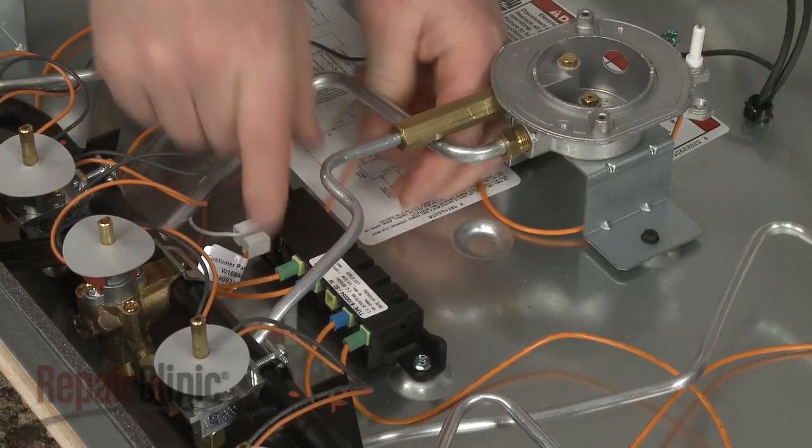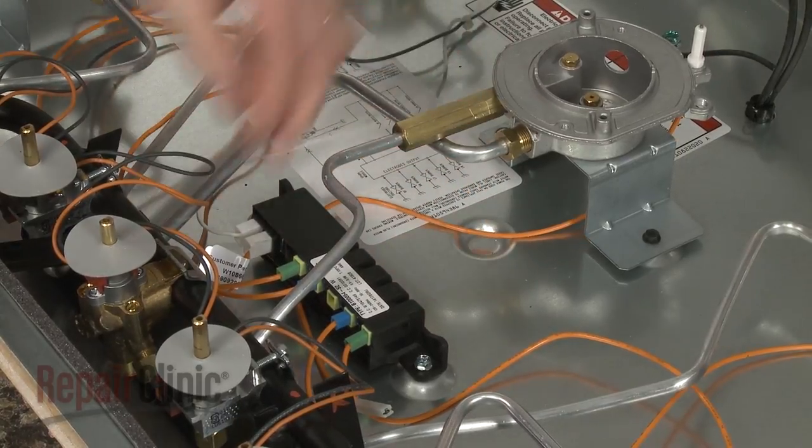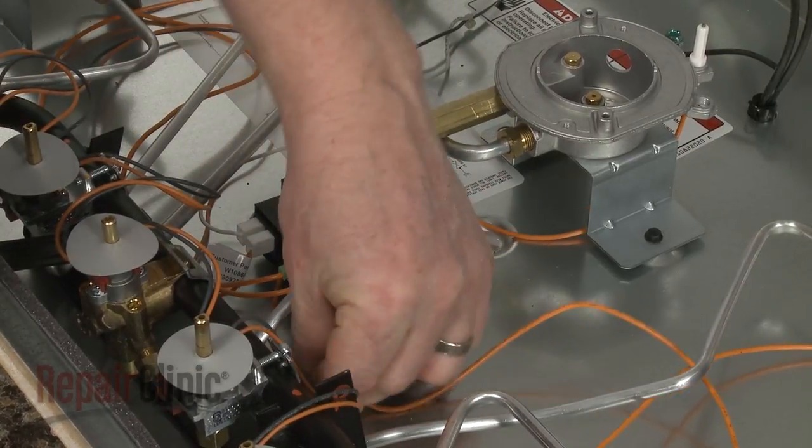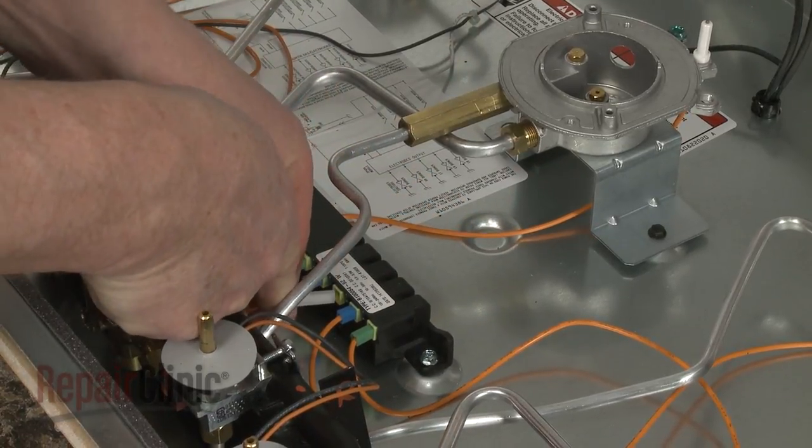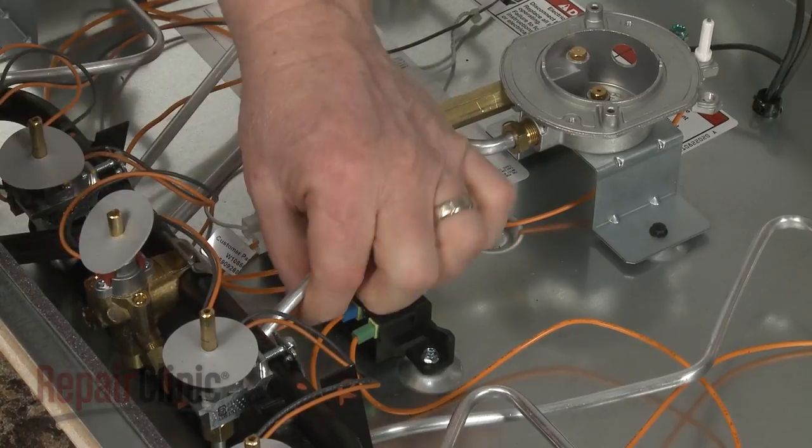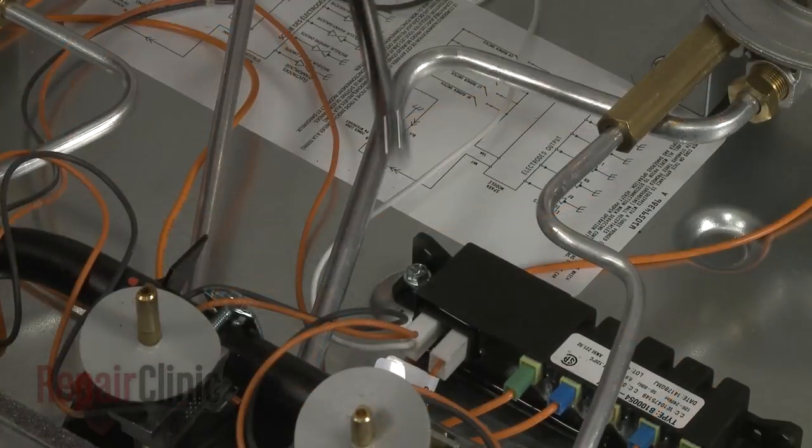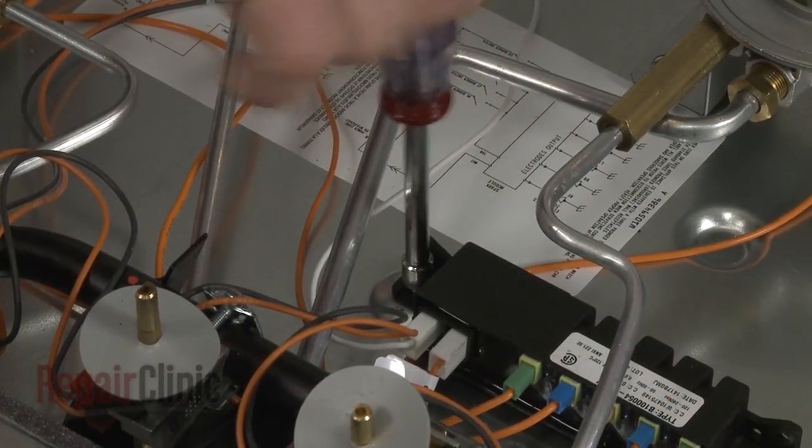Feed the wire under the spark module and connect it to the appropriate terminal. Tighten the screw securing the module to the base.